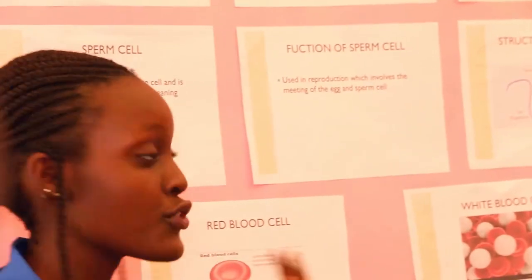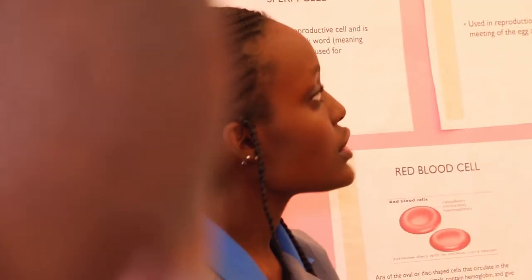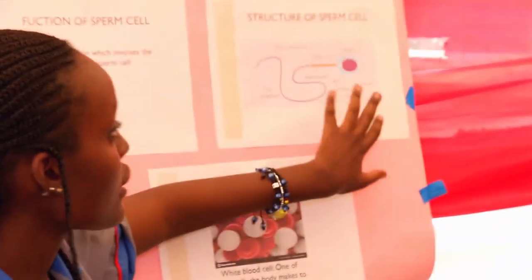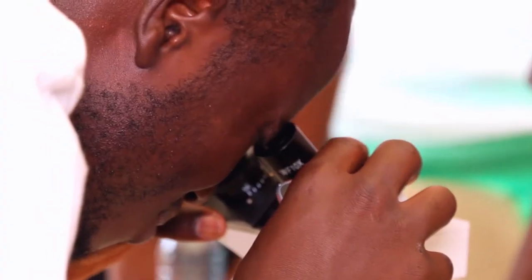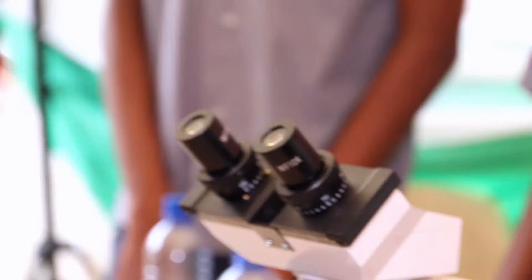Reproduction involves the mating of the egg and sperm cells. This is the structure of the sperm cell. We have the membrane, the mitochondria, the nucleus, the head, and the tail.